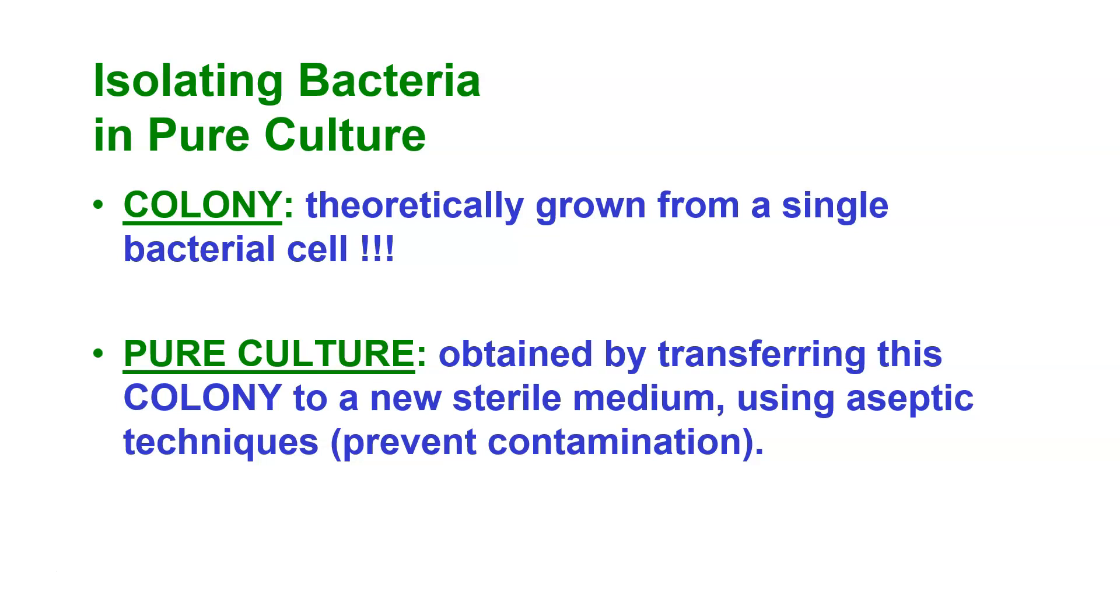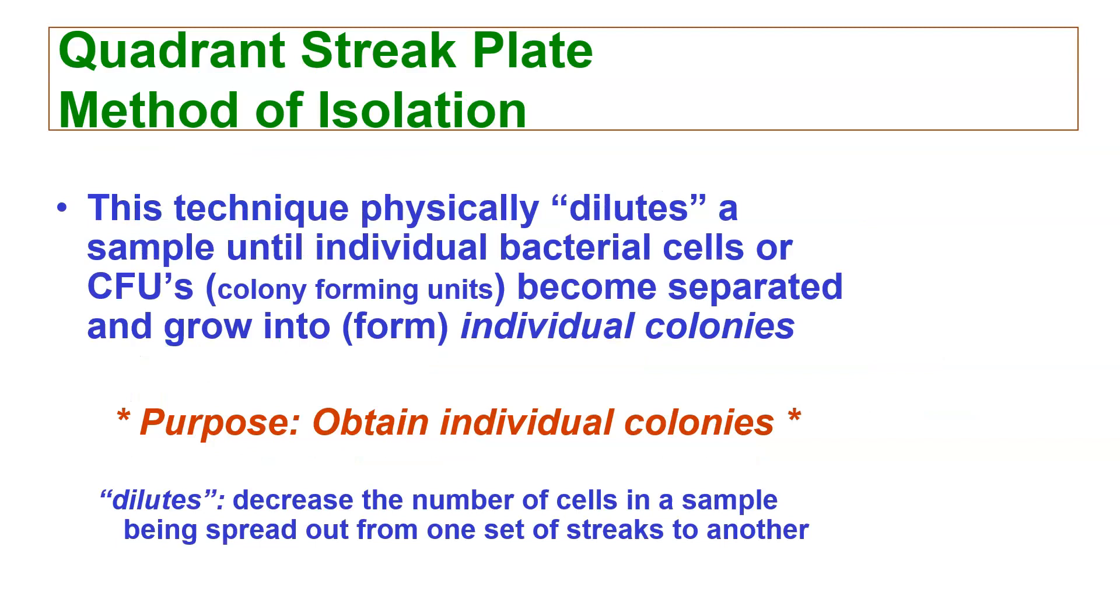When we deal with the quadrant streak, basically it is going to dilute the sample until we have individual bacterial cells or colony forming units. These are allowed to grow into individual colonies. Therefore, our purpose is to obtain individual colonies.